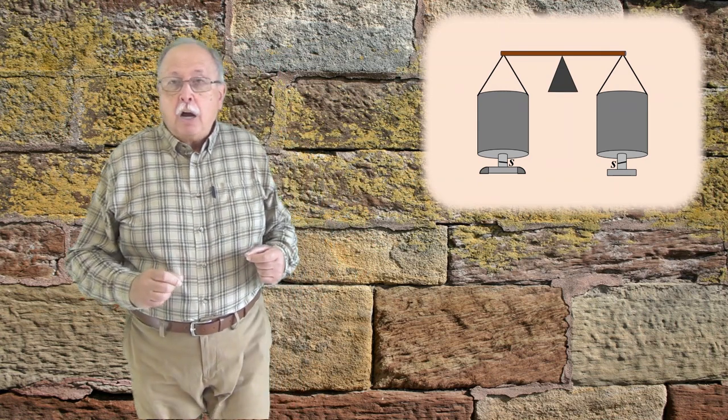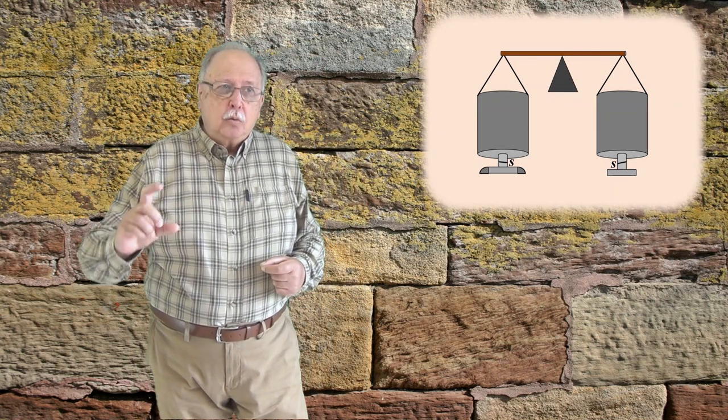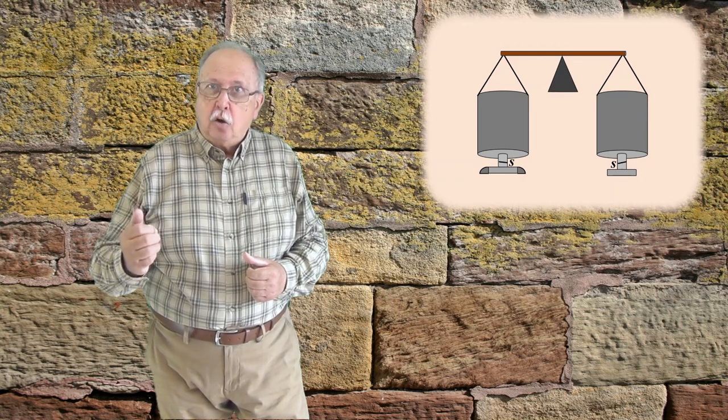Cele două vase au în partea de jos fiecare câte o țeabă scurtă, verticală, pentru golire, și aceste țevi sunt prevăzute cu supape, care pot fi deschise de la distanță cu aceeași telecomandă. Deci pot fi deschise simultan. Supapele sunt notate pe desen cu S.